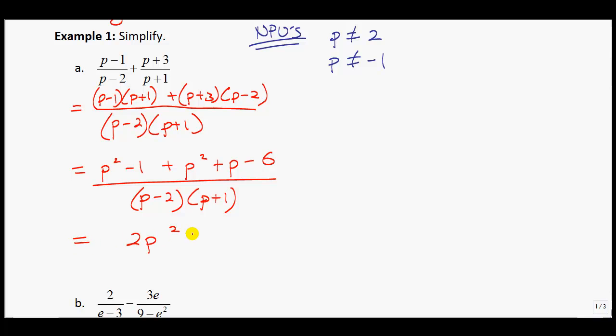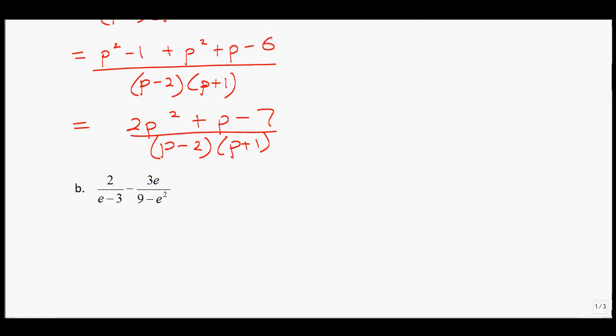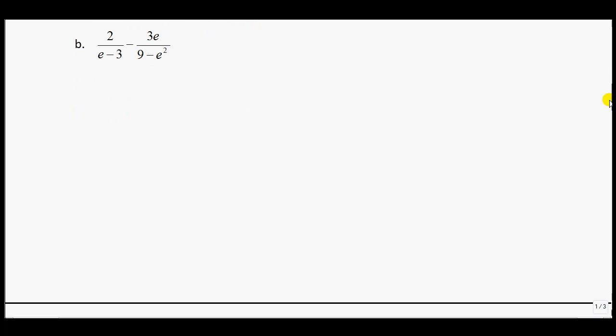All over your common denominator, p minus 2 multiplied by p plus 1. Lastly, gathering my like terms, I have 2p squared plus p minus 7, all divided by p minus 2, multiplied by p plus 1. That would be my final answer. Notice how I wrote them again in descending order of powers.